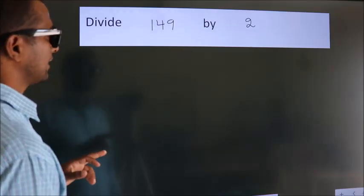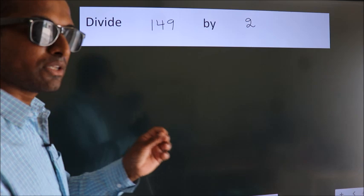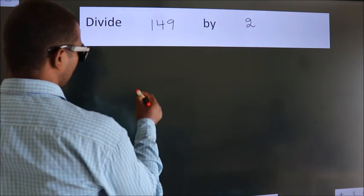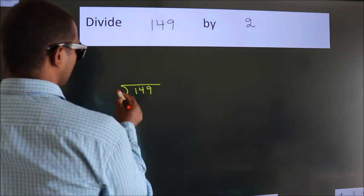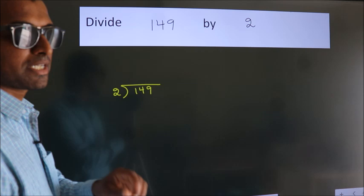Divide 149 by 2. To do this division, we should frame it in this way. 149 here, 2 here. This is your step 1.